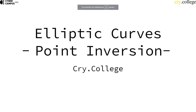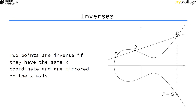Let's briefly talk about point inversion — inverting elements in our newly defined group of elliptic curve points. Two points are inverse if they have the same x-coordinate and if they are mirrored on the x-axis.